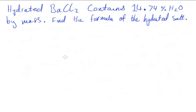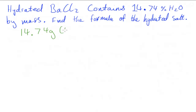This is slightly different from the last question and comparable to questions on finding molar mass from percentage abundance by mass. The first thing I'm going to do is assume that the sample I'm calculating from weighs 100 grams in total. If it weighs 100 grams, that means in that sample I'm going to have 14.74 grams of H₂O.